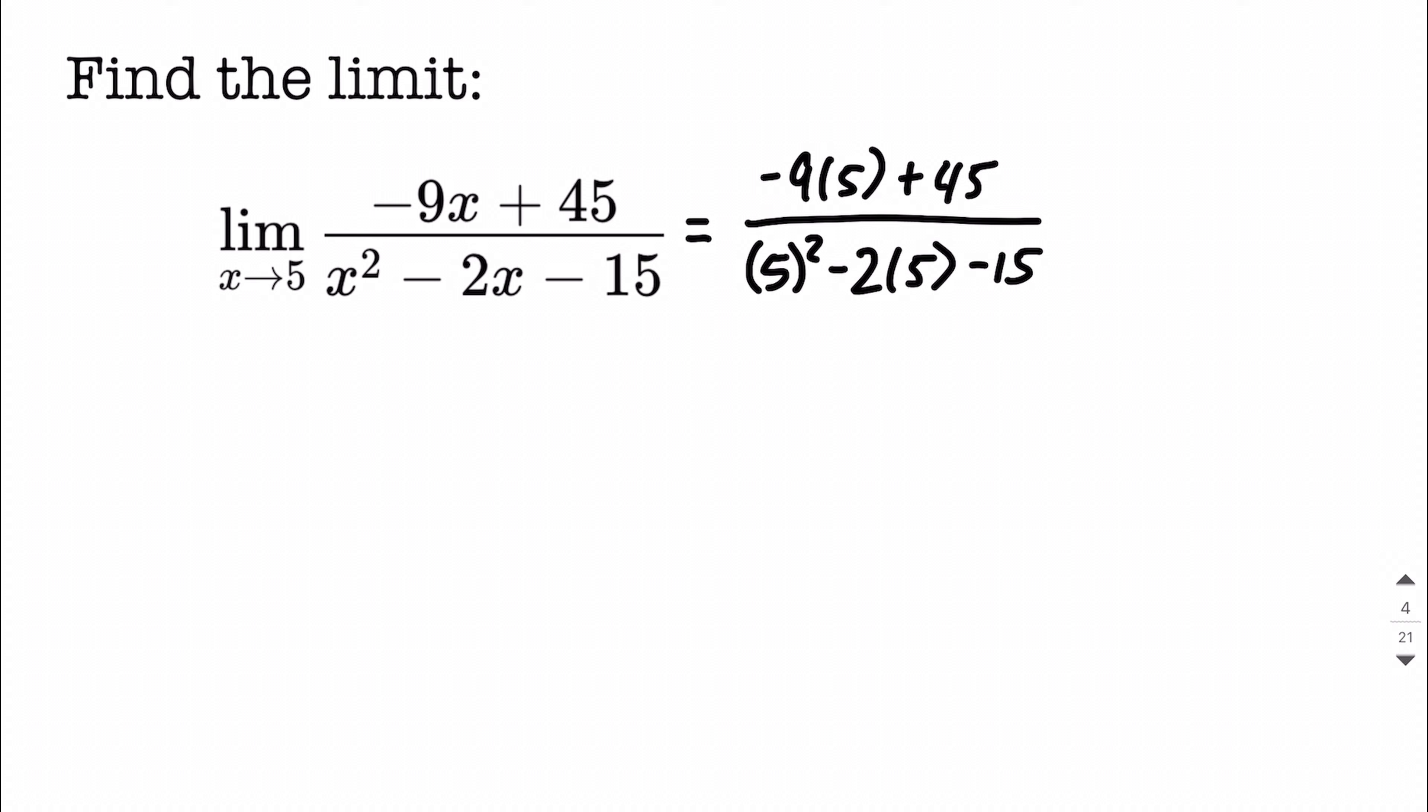As you can see in our numerator, we're going to end up with negative 45 plus 45, which is going to result in 0 in our numerator. For our denominator, we're going to get something similar, where we get 25 minus 10 minus 15, which also results in 0.